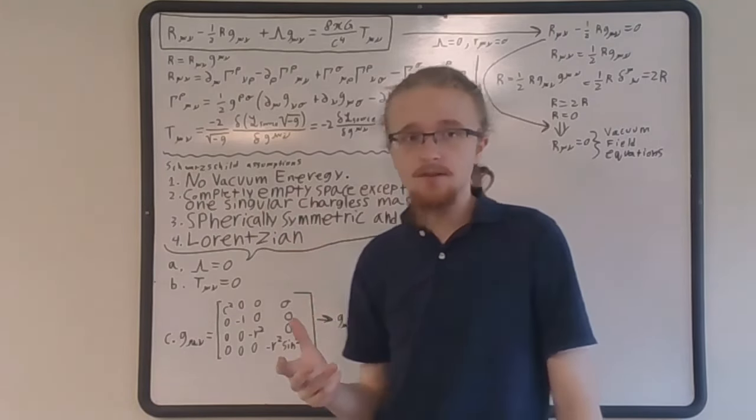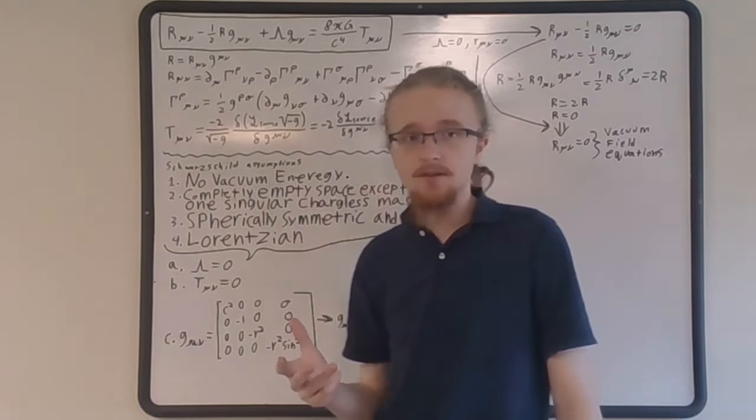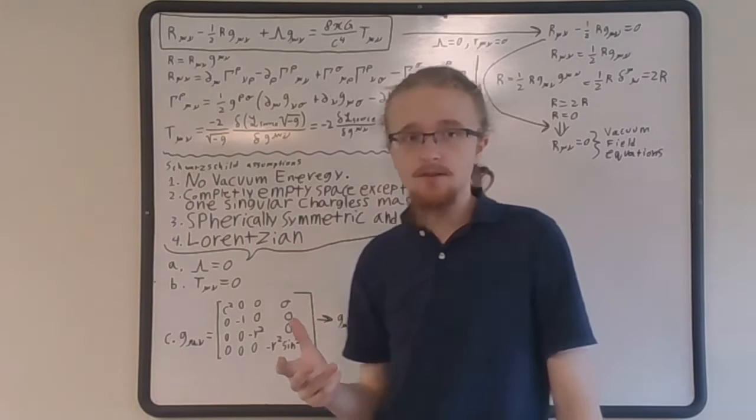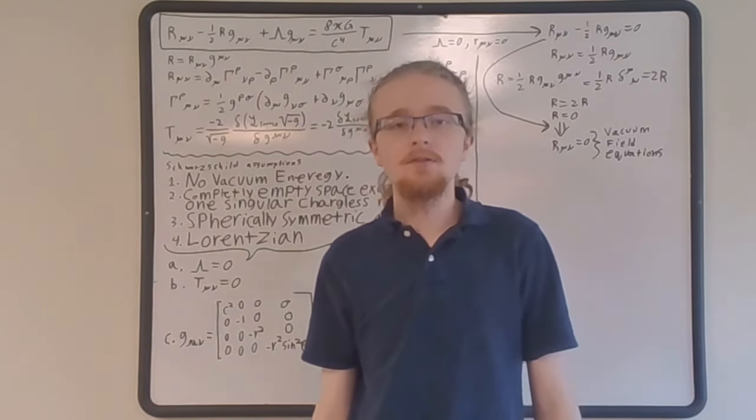The first two properties give the following: the cosmological constant is zero, and the stress-energy-momentum tensor goes to zero because in the limit that all contents of the vacuum go to one singular point, the stress-energy-momentum tensor vanishes. For this problem, spherical coordinates will be used.